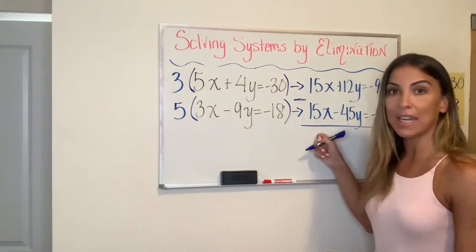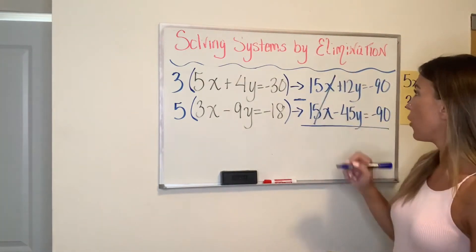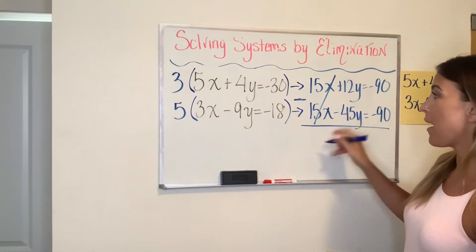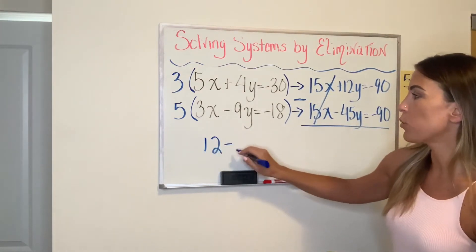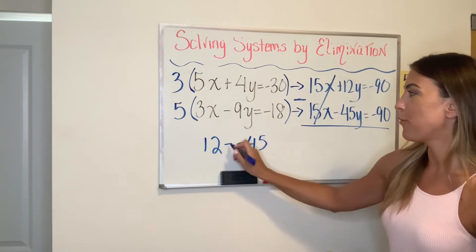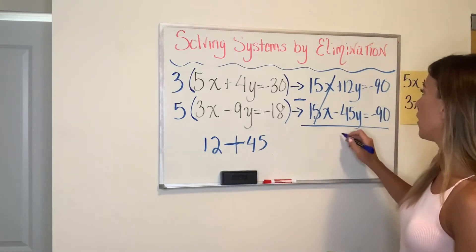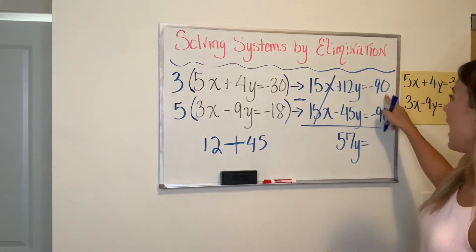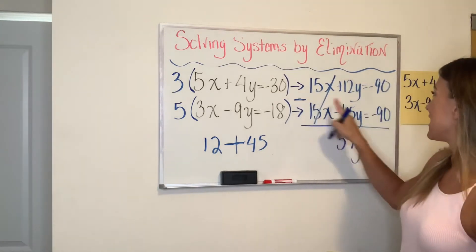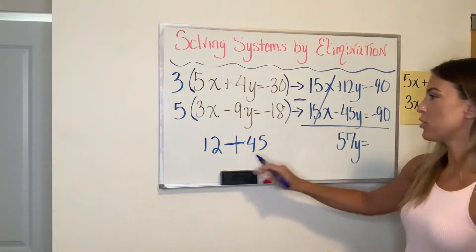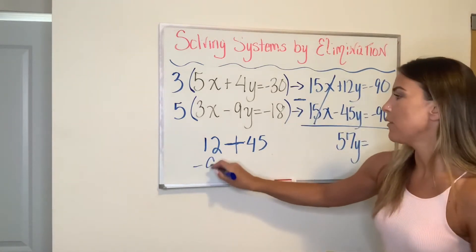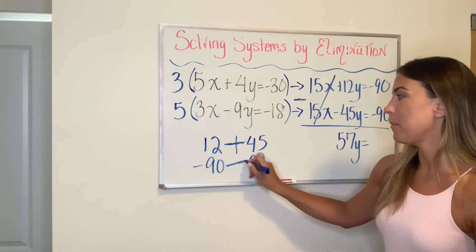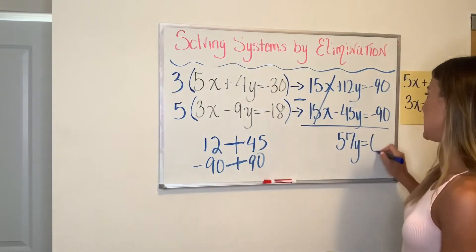So 15x minus 15x cancels out, 12 minus negative 45y. That means I'm actually adding. If I write that out for you, 12 minus negative 45, that means that I'm actually adding these together. So it's going to be 57y equals negative 90 minus negative 90. Don't forget to go back to that subtraction sign. Negative 90 minus negative 90. Again, KCC, that means I'm actually adding negative 90 plus 90 is zero.